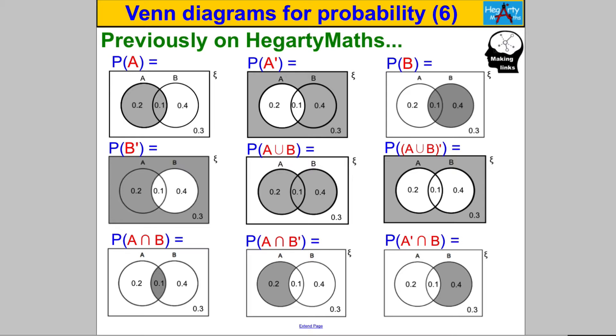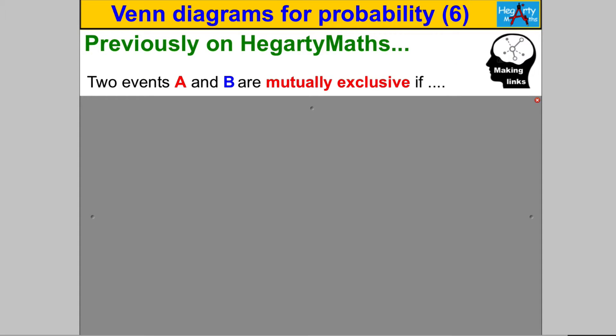Pause the video and double check you can find the following probabilities from the Venn diagram shown. That was just a nice counting exercise and you should have got the answers shown. I also need you to be aware of these terms — pause and double check if you can remember them.